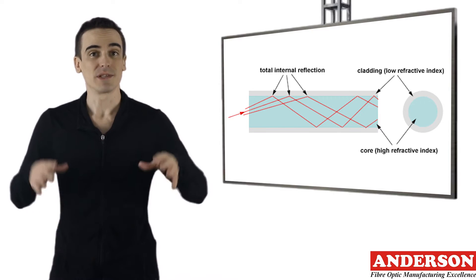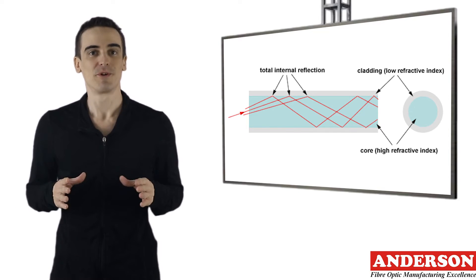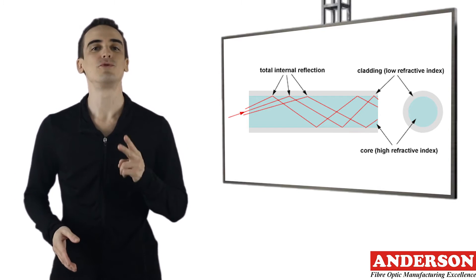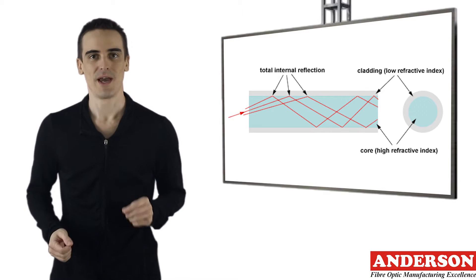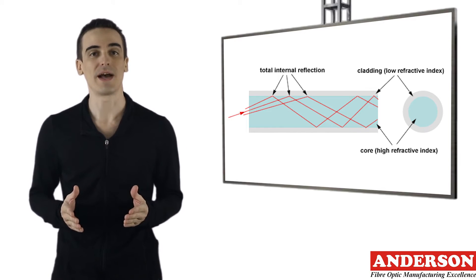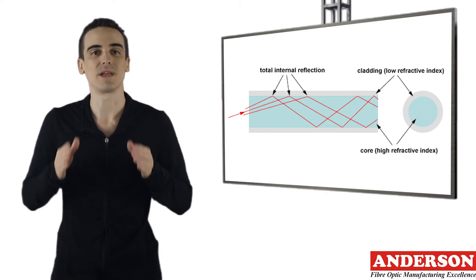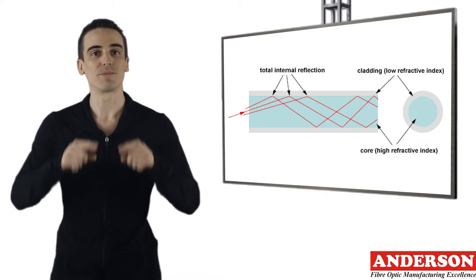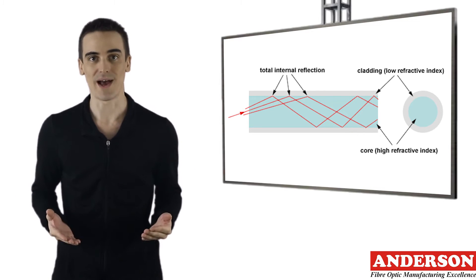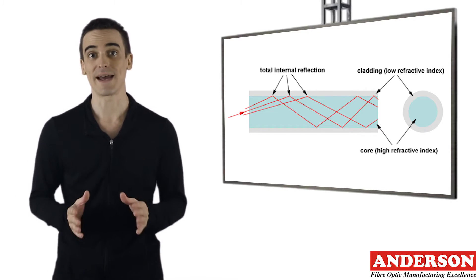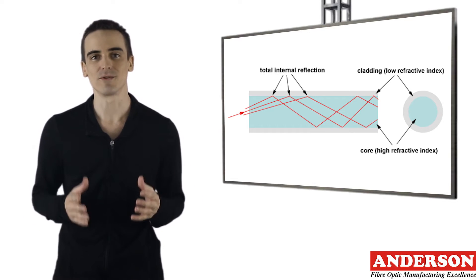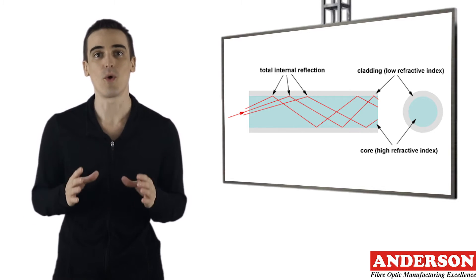The other thing that keeps light in the fiber is the structure of the glass, which is made up of two separate parts. The central part of the glass is called the core, and that's the part that the light travels through. Wrapped around the outside of the core is another layer of glass called the cladding. The cladding's job is to keep the light signals inside the core.